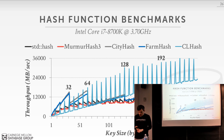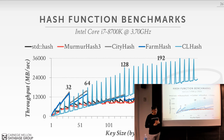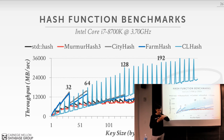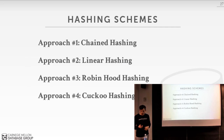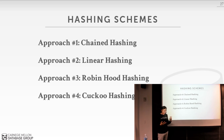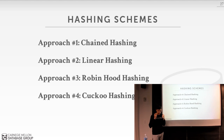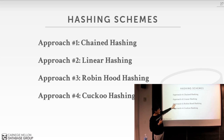Hash function output is either 32 or 64 bits, which you then mod by the number of partitions or slots in your hash table. Now that we have a hash function, we need a hashing scheme — the method for handling key collisions in the hash table. We'll cover chained hash tables, linear probing hash tables, and then two variants of linear probing: Robin Hood hashing and cuckoo hashing.